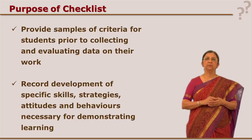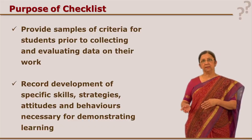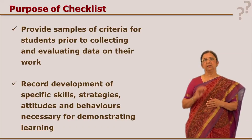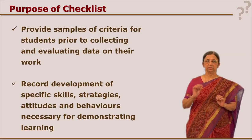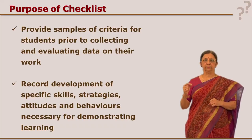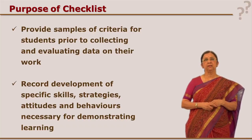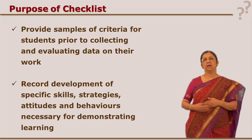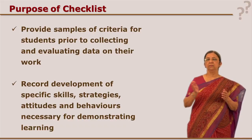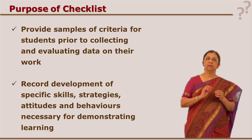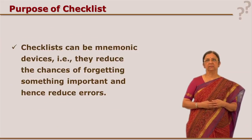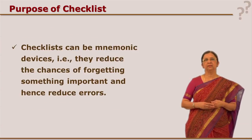Certain statements related to attitude can also be recorded using a checklist. But the moment you say 'to a great extent,' 'to a lesser extent,' 'sometimes,' 'always' — this is not part of a checklist. A checklist has only two options: yes or no. Please see the difference between a checklist and a rating scale: a rating scale has many alternatives because it gives an extent, whereas a checklist gives you exactly presence or absence.